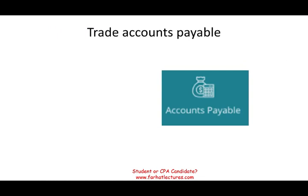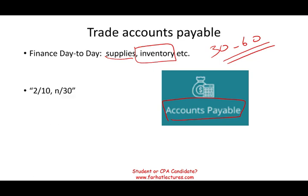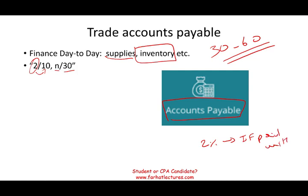Starting with accounts payable — this is used to finance your day-to-day operations. You might buy inventory on account, and the seller encourages you by giving you 30 or 60 days to pay later. Accounts payable often comes with a discount written as something like 2/10/30, meaning you get a 2% discount if paid within 10 days, or you have 30 days to pay the full amount.